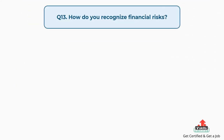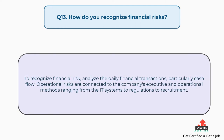Question number thirteen: how do you recognize financial risks? To recognize financial risk, analyze the daily financial transactions, particularly cash flow. Operational risks are connected to the company's executive and operational methods ranging from IT systems to regulations to recruitment.